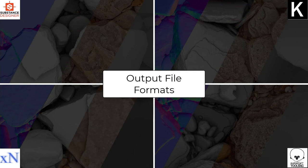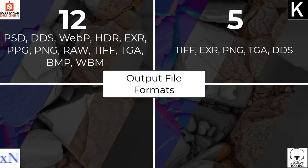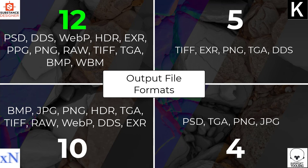Next, texture output formats for exporting baking results: Substance Designer offers 12 options, Knalt offers 5, XNormal offers 10, and Marmoset Toolbag 3 offers just 4. Substance Designer wins here; XNormal is also great. Knalt's 5 options are strong ones, though it lacks PSD. Marmoset only offers 4 and would benefit greatly from adding at least TIF and EXR.